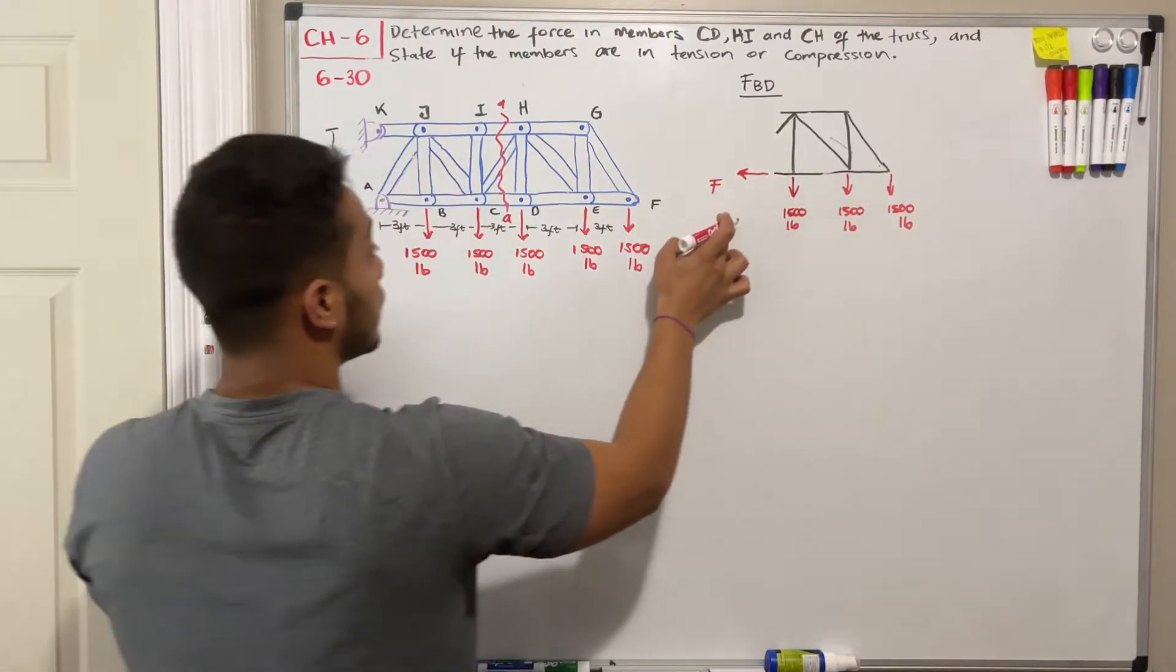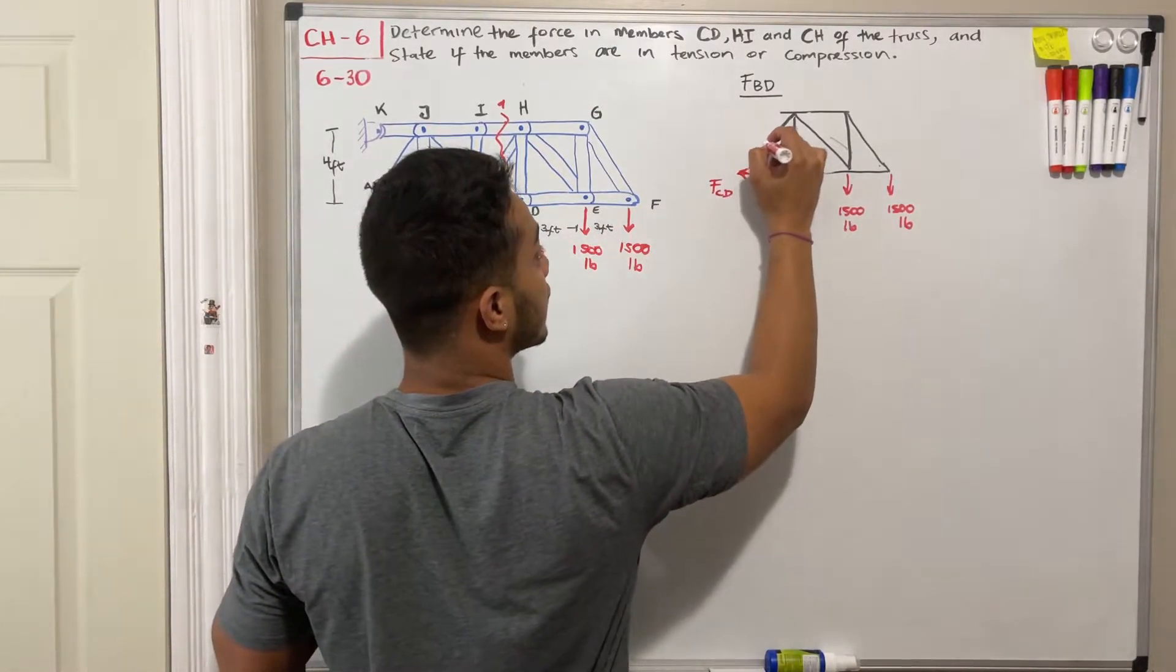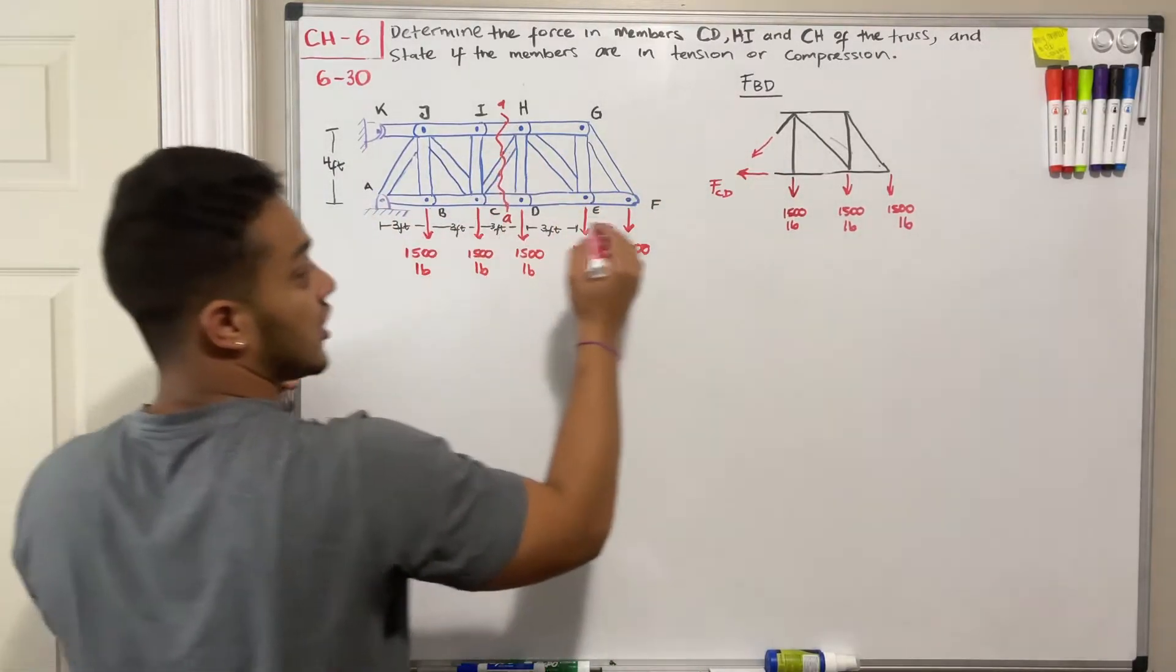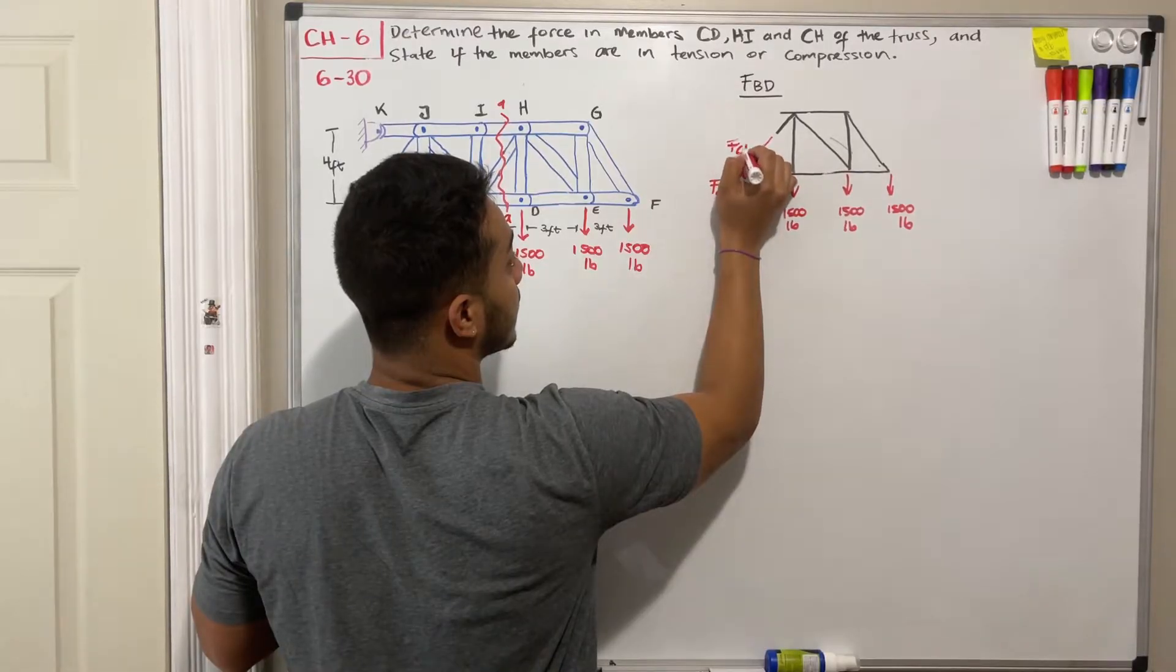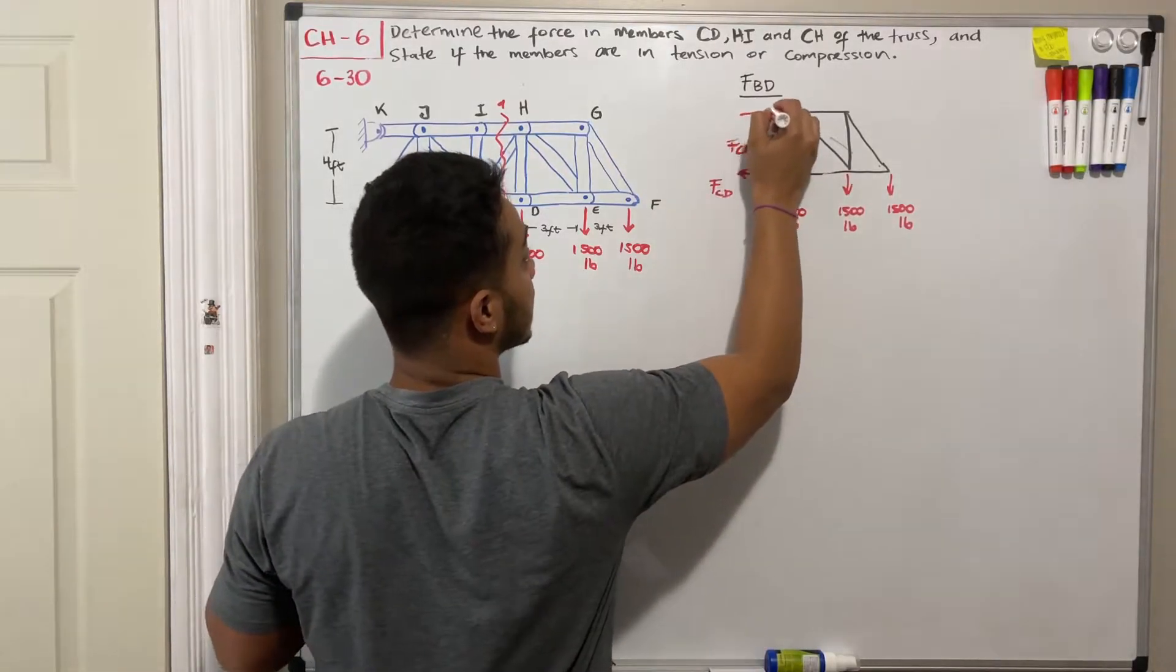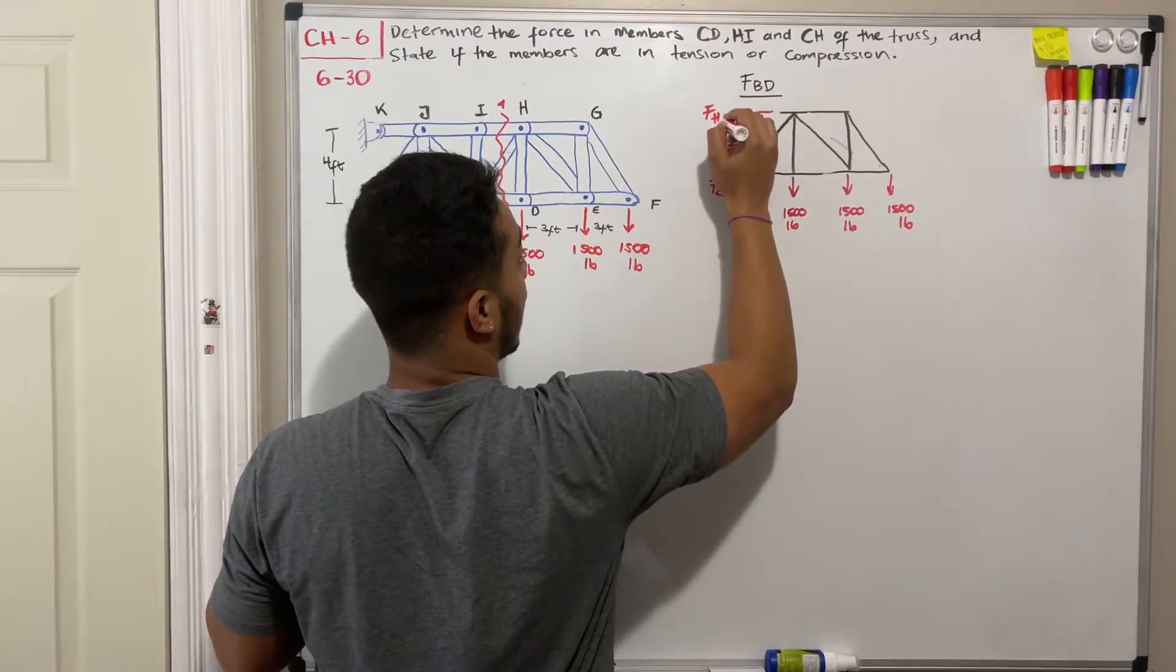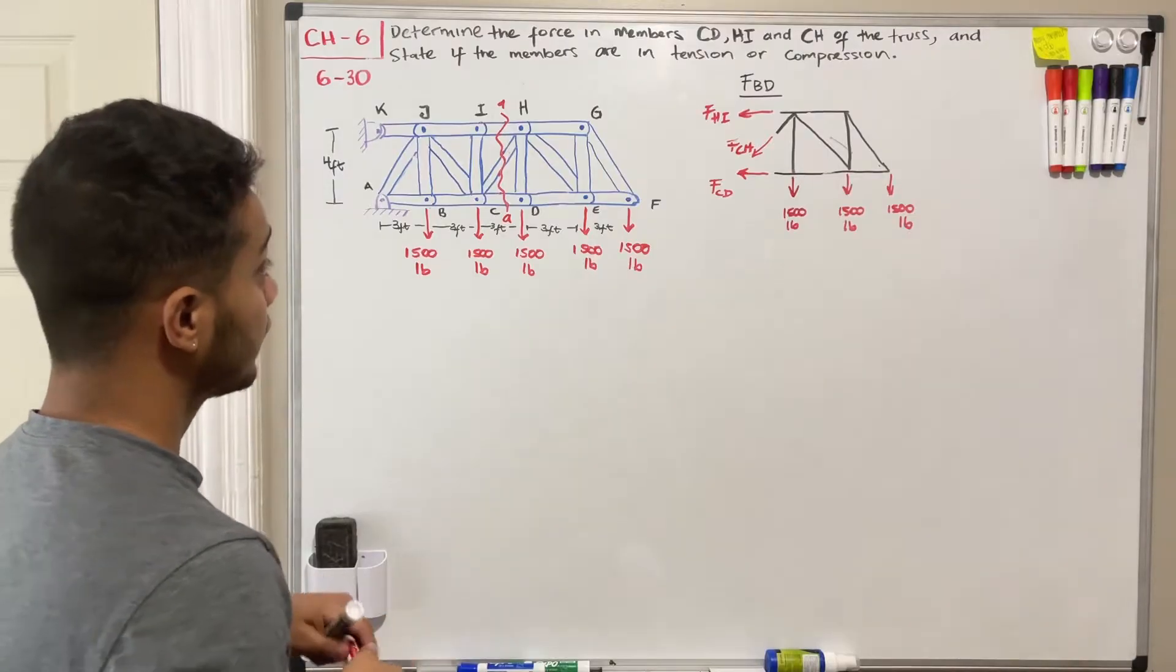So for example, this over here will be my force CD. Because there must be a force that these members are applying. This guy over here will be my force CH. And lastly, this will be my force HI. Okay. So we got our free body diagram.